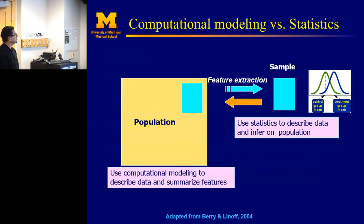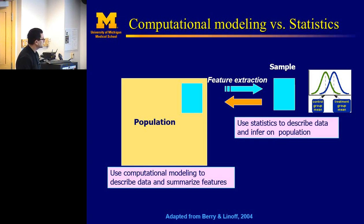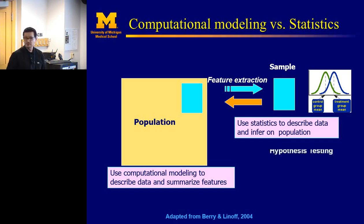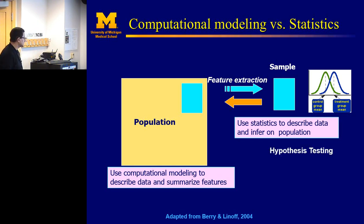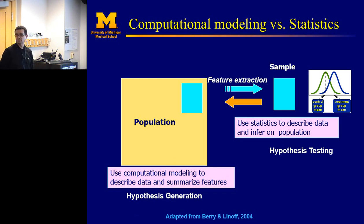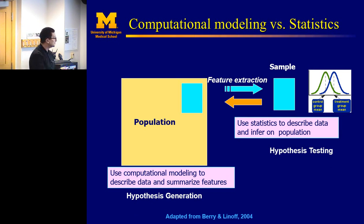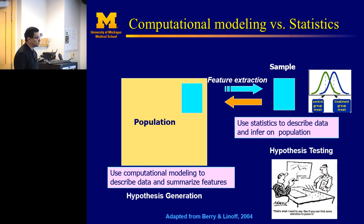Computational modeling and statistics use similar tools, but they cannot be more different from each other. In statistics, we make inferences from data with the objective of testing hypotheses. In computational modeling, it is the process of generating hypotheses — you are trying to identify new ideas that you can test later on.